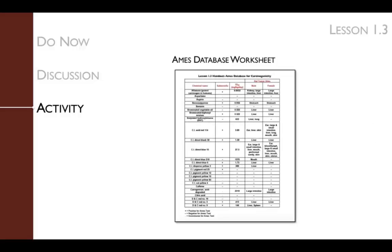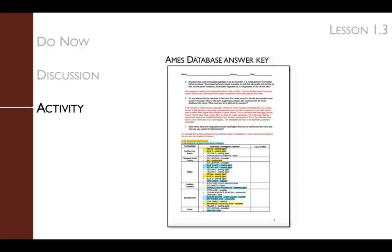In this activity, students work in small groups to examine food additives and determine if there are any potential carcinogens present in these food or drink items. The students will use their worksheet to organize their findings as they look for patterns from the Ames test database.